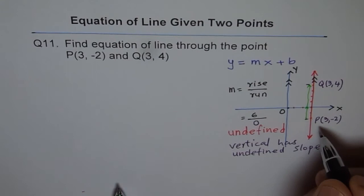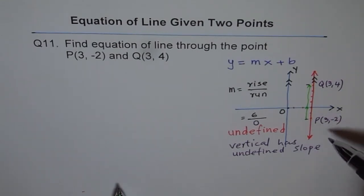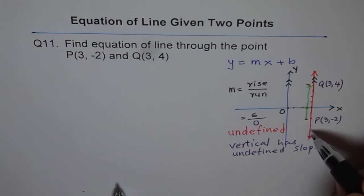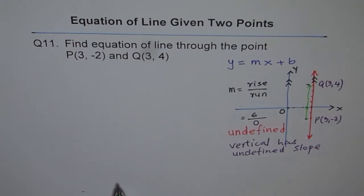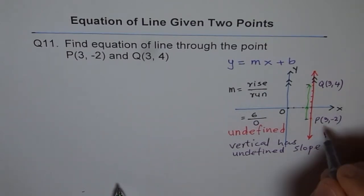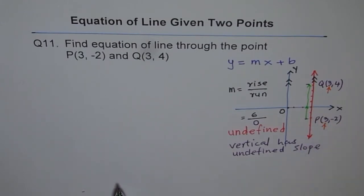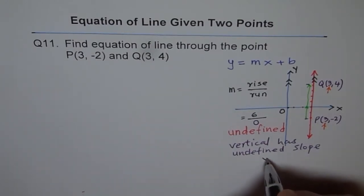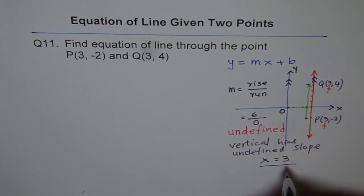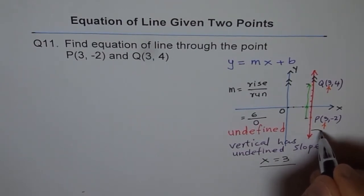And therefore, we cannot use slope-intercept form of the equation. So how to write equation of such a line? That's a big thing. So the way we write equation of this line is by our observation. So what do we notice? We notice that every point on this line has one thing in common. And what is that? That is the x value. Do you see that x value here? It is 3 and 3. Even if I take any other point on the line, x value is going to be 3 always. And therefore, we say that for such a line, the equation is x equals 3.